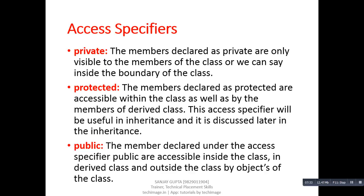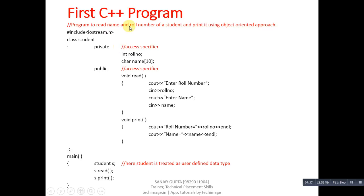Here is the first C++ program. The objective is to read the name and roll number of a student and print it using an object-oriented approach. We include the header file iostream.h. The class keyword is used, the class name is 'student'. In private, two variables — roll number and name — are declared as data members. In the public section, two functions — 'read' and 'print' — are defined. 'cout' and 'cin' are objects predefined in iostream.h: cout is similar to printf and cin is similar to scanf from C.